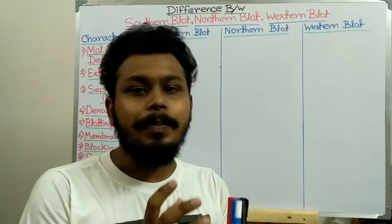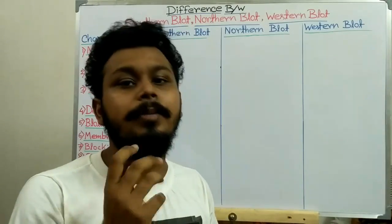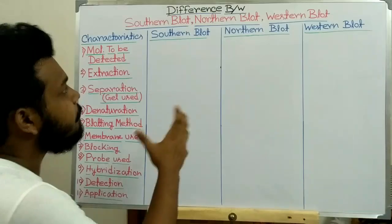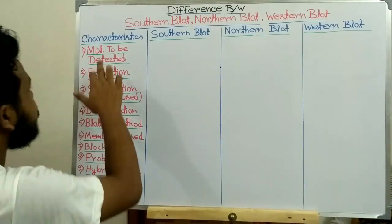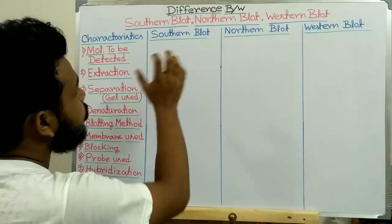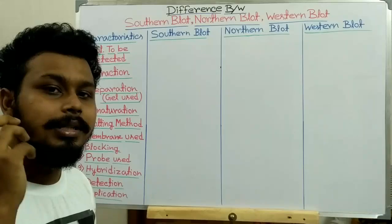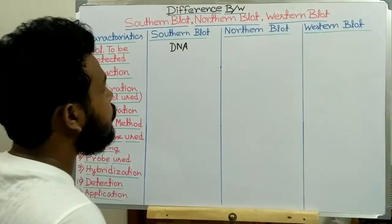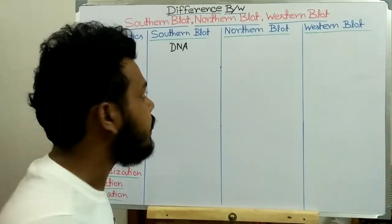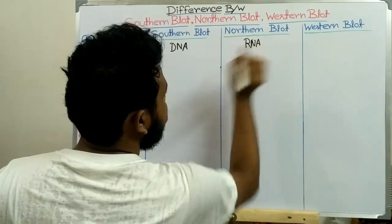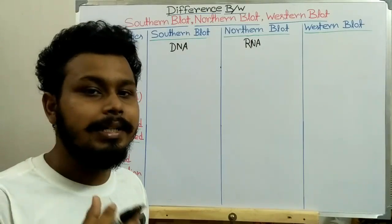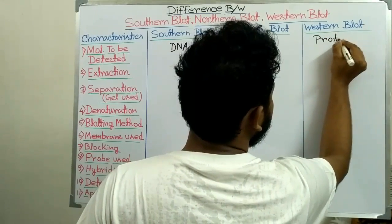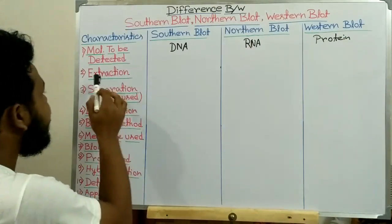These three blotting techniques are principally similar but they detect or identify different biomolecules. Looking at the first characteristic — the molecule to be detected: in Southern blot we detect a specific DNA molecule from a cell or tissue; in Northern blot we detect a specific RNA molecule; and in Western blot we identify a specific protein in a cell or tissue.